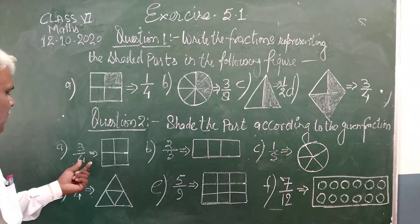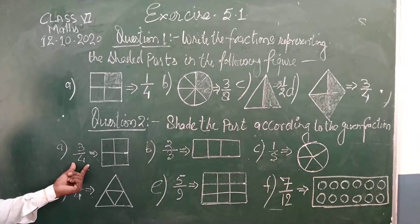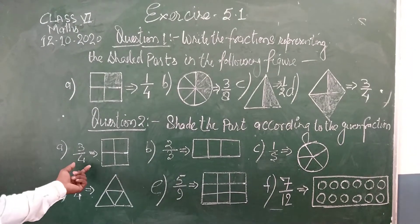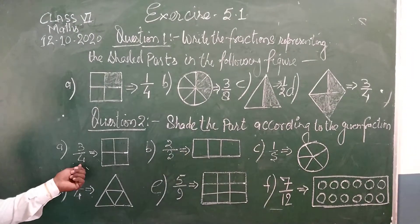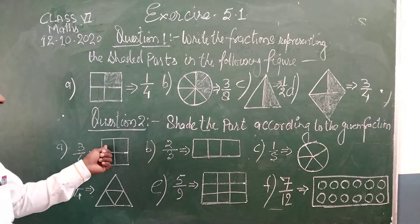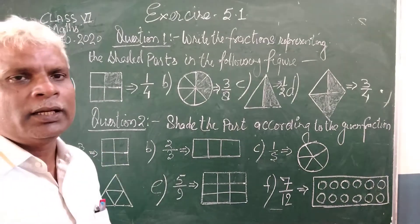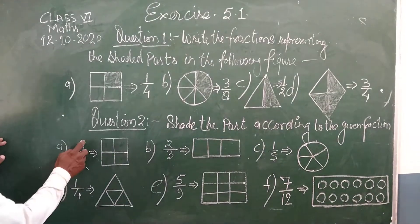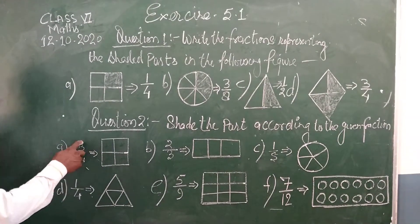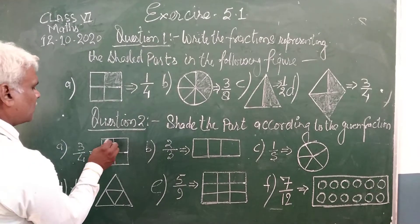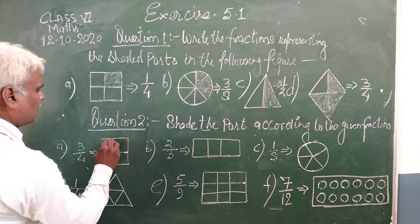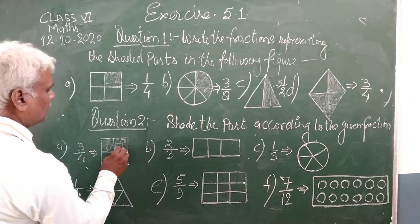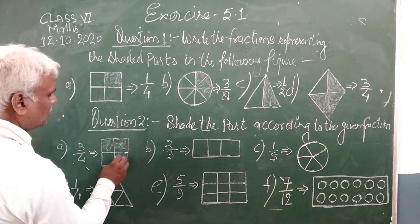Here is a figure divided into 4 equal parts — 1, 2, 3, 4. That is the denominator. The denominator is 4, meaning this figure is divided into 4 parts. Now shade 3 of the 4 parts. Then shade 1, 2, 3.